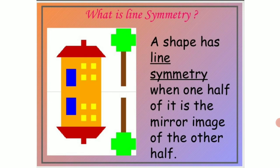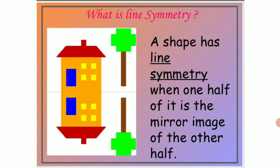Then what is line symmetry? A shape has line symmetry when one half of it is the mirror image of the other half. Here in the given picture children you can see the house being divided into two equal parts and both these parts are the mirror image of each other.